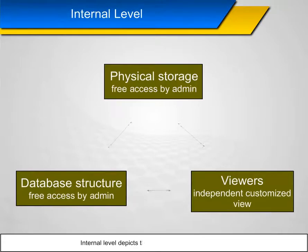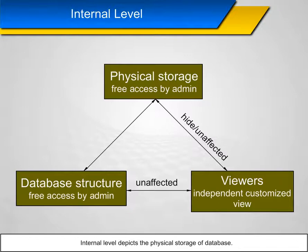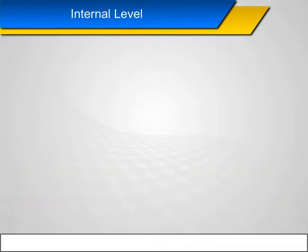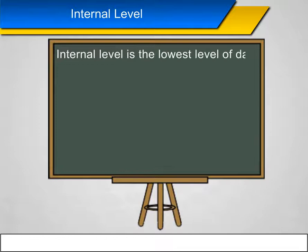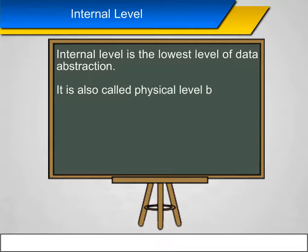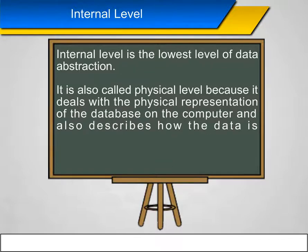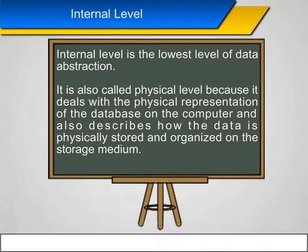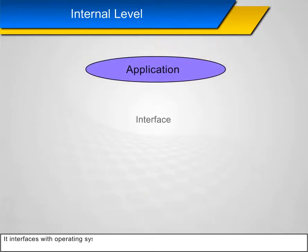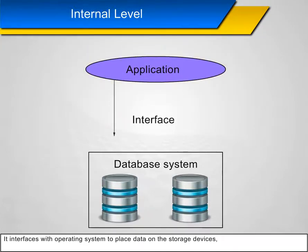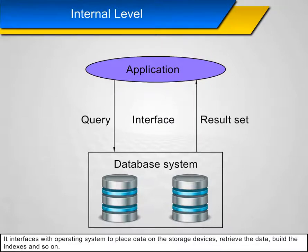Internal level: The internal level depicts the physical storage of the database. It is the lowest level of data abstraction, also called the physical level, because it deals with the physical representation of the database on the computer and describes how the data is physically stored and organized on the storage medium. It interfaces with the operating system to place data on storage devices, retrieve the data, build indexes, and so on.